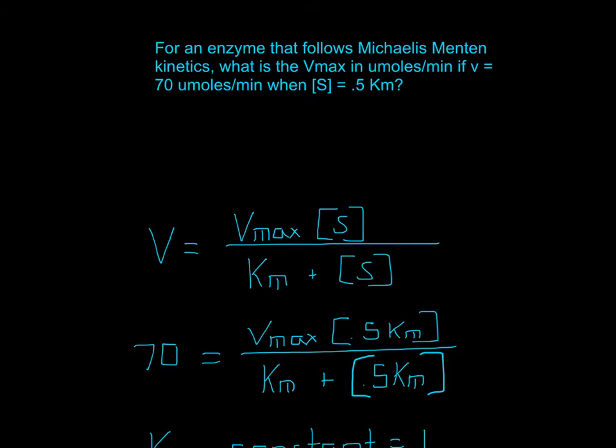Now, they don't actually give us a number for Km or substrate concentration. They give us 0.5 Km equals substrate concentration. That can be a little tricky, but how you get around that is just substitute in 0.5 Km for the substrate. So instead of putting a number for substrate, you just put in 0.5 Km. Anytime you see the substrate concentration symbol, you just put in 0.5 Km.